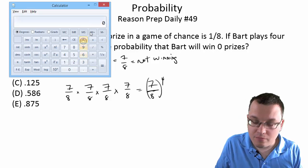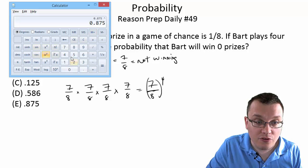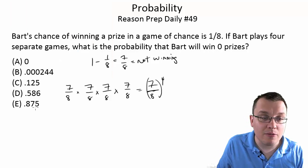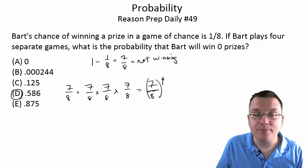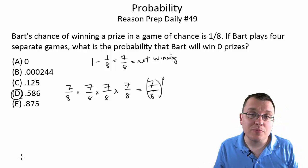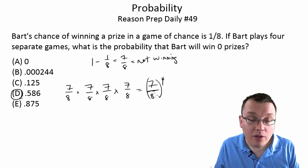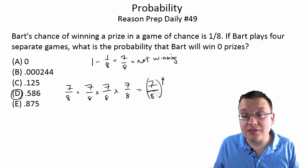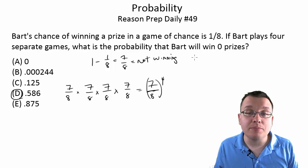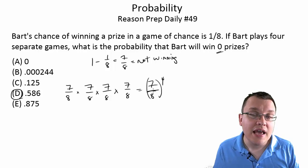Seven eighths to the fourth gets us 0.586, and that would be choice D. As you can see, it's actually not as complicated as you might think. We don't need to use binomial probability, even though in some sense we are using it here. It's just a simpler case because all we care about is winning zero prizes.